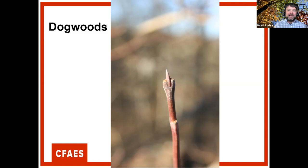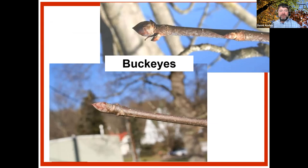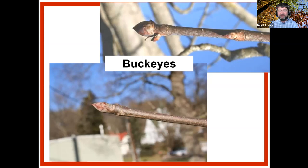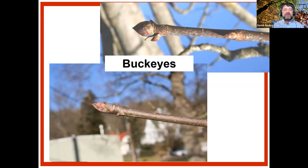Ohio's two native buckeyes can be separated by their terminal buds: Ohio buckeye buds have keeled scales (a distinct ridge like a boat's keel), while yellow buckeye buds are not keeled. Another easy method: scratch the Ohio buckeye twig and it gives off a skunky, offensive odor — hence its other common name, fetid buckeye.